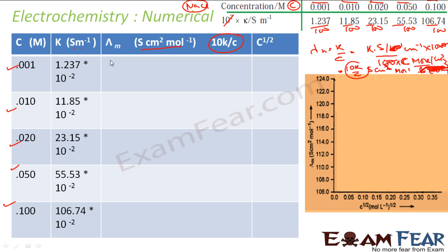Let's find 10K/C for each concentration. For C = 0.001: 10 × (1.237 × 10⁻²) / 0.001 = 123.7 S·cm²/mol.